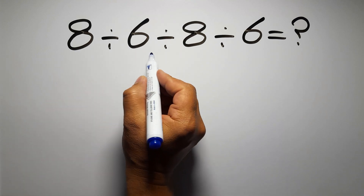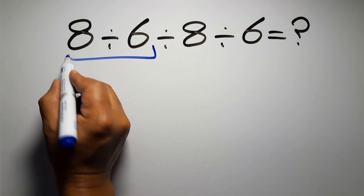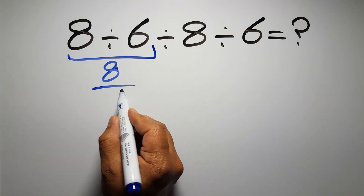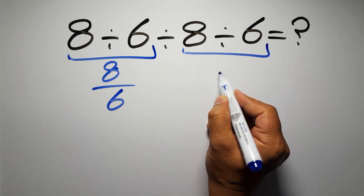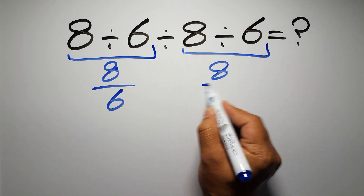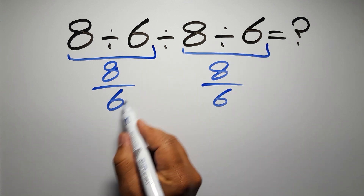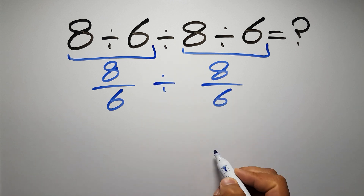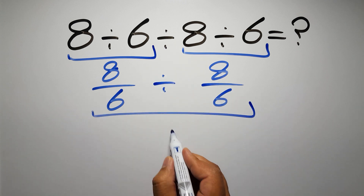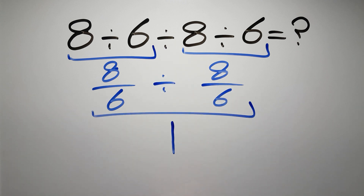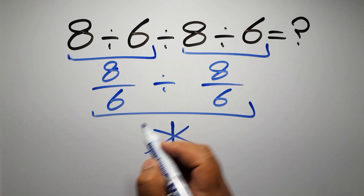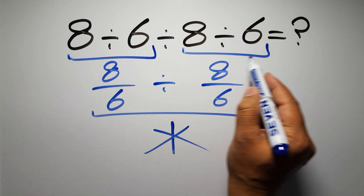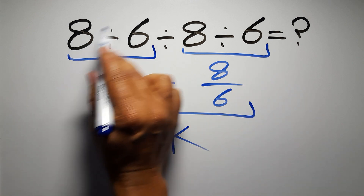8 divided by 6 can be written as 8 over 6, and again here we have 8 divided by 6, so 8 over 6 divided by 8 over 6, which equals 1. But this answer is not correct, because according to the order of operations, when we have more than one division in an expression, we have to work from left to right.